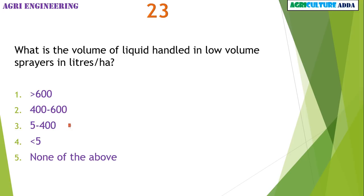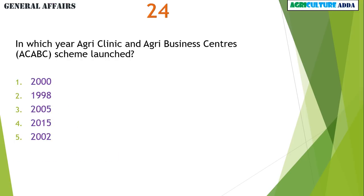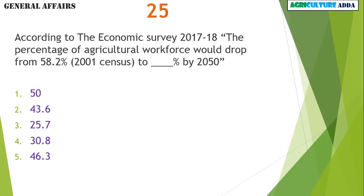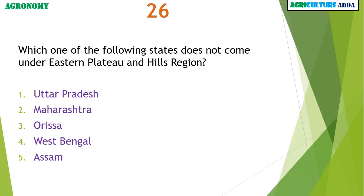What is the volume of liquid handled in low volume sprayers in liters per hectare? 5 to 400 liters per hectare. In which year was the Agri-Clinic and Agribusiness Centre Scheme launched? 2002. According to the Economic Survey 2017-18, the percentage of agricultural workforce would drop from 58.2% to 25.7% by 2050.